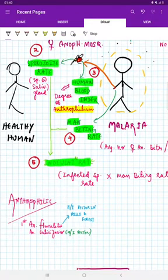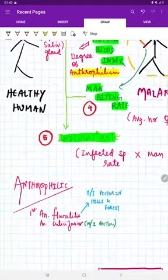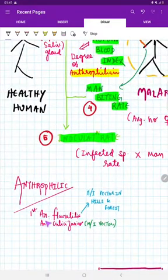What is the vector that is going to be more anthrophilic? It is Fluviatilis. You know Fluviatilis is going to be present where? In the hills and forest. Now can you picturize epidemiological trend of this malaria? Yes, that's what it is.